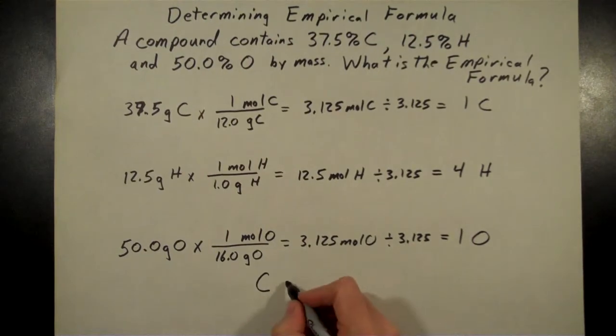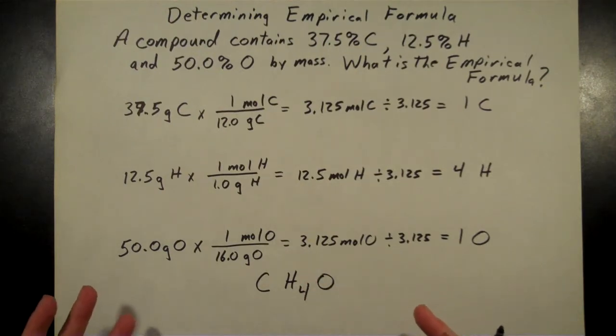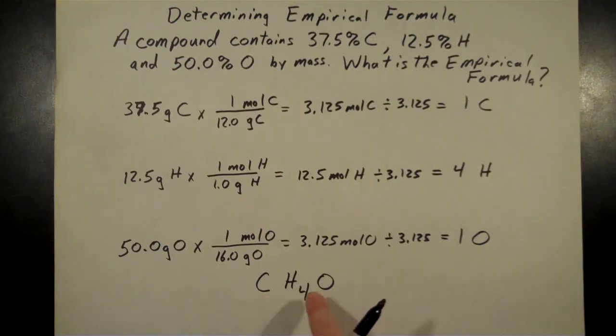So the empirical formula here, it's 1 carbon, CH4 for those 4 hydrogens, and 1 oxygen. Now, does that mean this is the molecular formula? No, not at all. It could be 1 carbon, 4 hydrogens, 1 oxygen, or it could be 2 carbons, 8 hydrogens, and 2 oxygens, or 3 carbons, 12 hydrogens, and 3 oxygens. This is just telling us what the simple ratio is of carbon to hydrogen to oxygen. It doesn't really tell us anything else about it other than what that ratio is. And so we'll learn how to do that a little bit later.